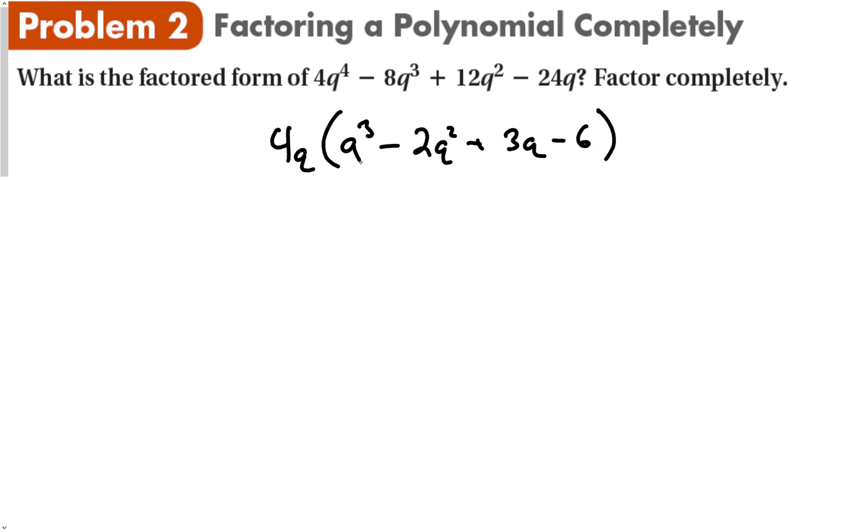Now, if you see the third power somewhere, and the question says to factor this, this is the only technique that you can use for now, until you get a little bit more advanced. So what we're going to do is we're going to factor this by grouping first. The common factor with both of those is q squared, and we're left with q minus 2.